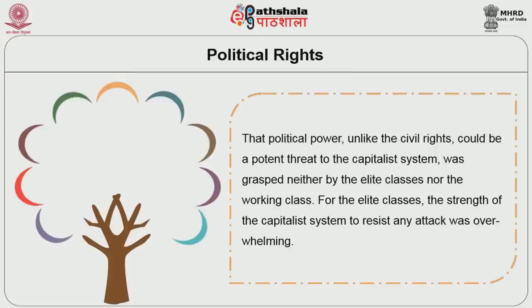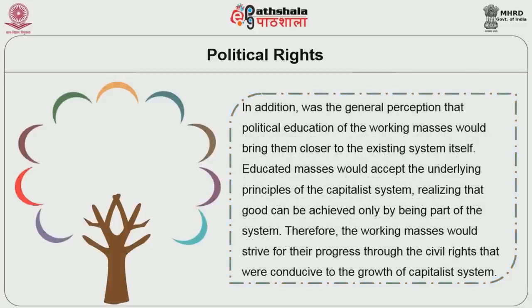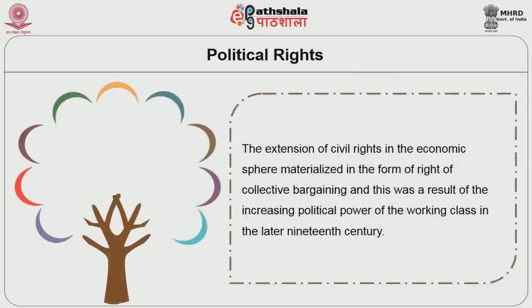For the elite classes, the strength of the capitalist system to resist any attack was overwhelming. In addition, there was the general perception that political education of working masses would bring them closer to the existing system itself. Educated masses would accept the underlying principles of the capitalist system, realizing that good can be achieved only by being part of the system. Therefore, the working masses would strive for their progress through the civil rights that were conducive to the growth of the capitalist system. The extension of civil rights in the economic sphere materialized in the form of the right of collective bargaining, and this was the result of the increasing political power of the working class in the later 19th century.